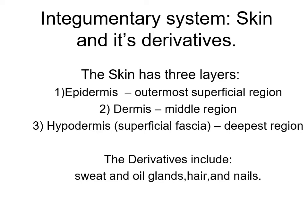Within the dermis you find a lot of the derivatives of the integumentary system. It's a system because it's not just one organ. The largest organ in the body is the skin, and the skin has other derivatives such as sweat and oil glands, hair and nails, muscles, nerves, and blood vessels.